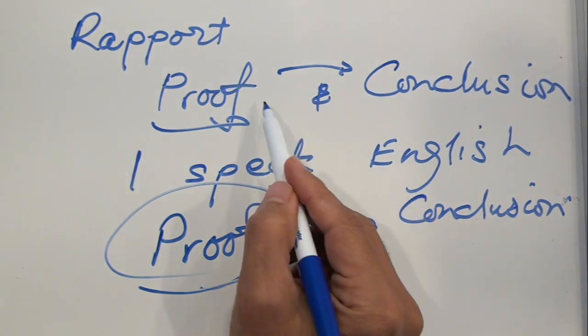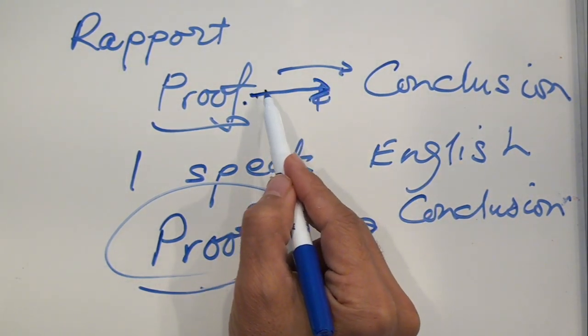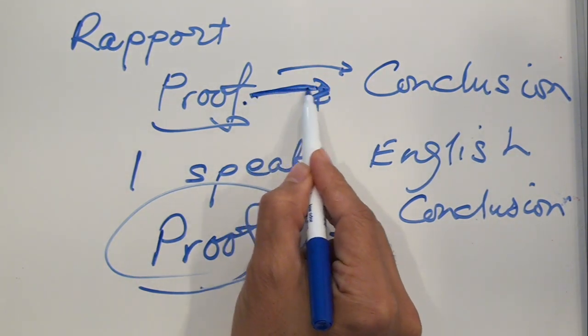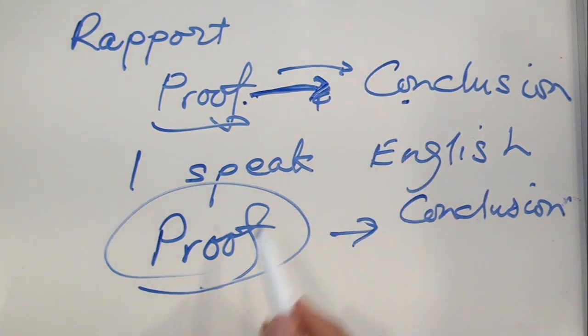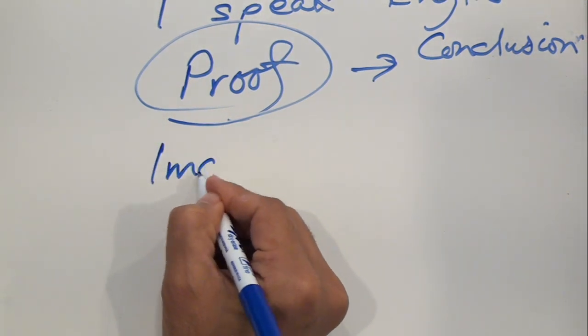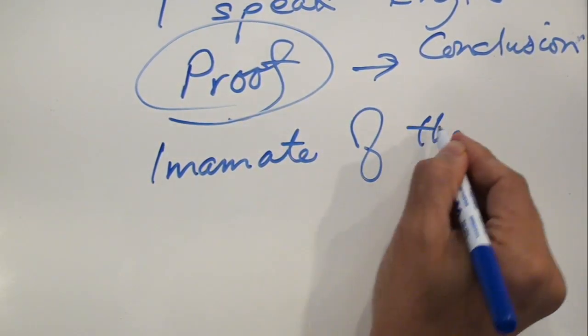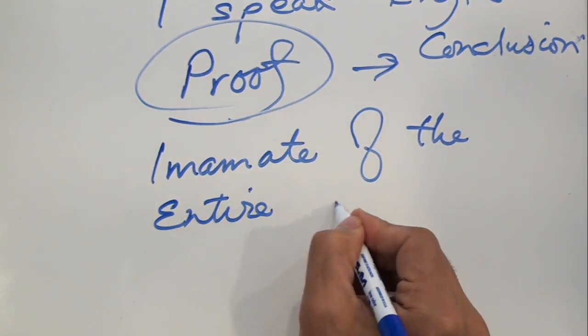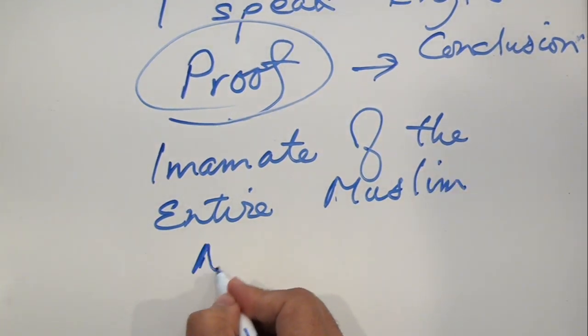So there has to be, the proof has to have a rapport. The proof has to be such that in a rational way, in a logical manner, this would lead common folks to believe in that conclusion. So we are talking about the imamah of the entire Muslim nation after the demise of the Nabi sallallahu alayhi wa sallam.